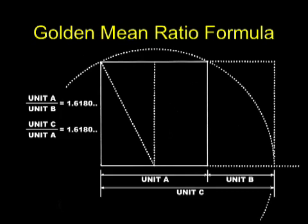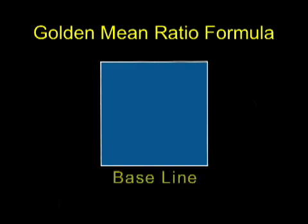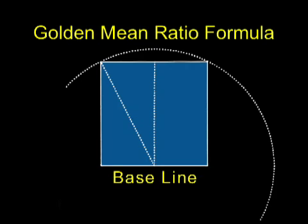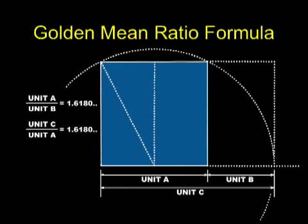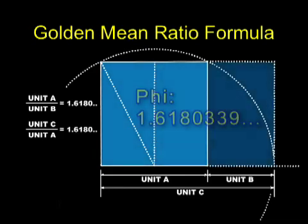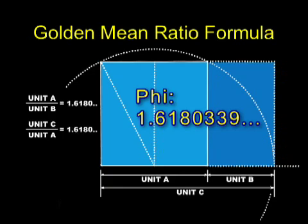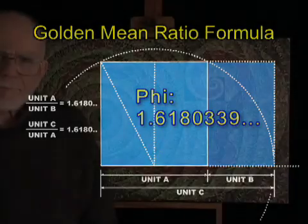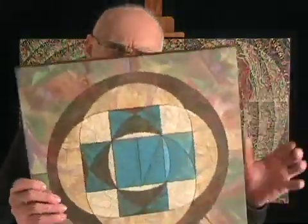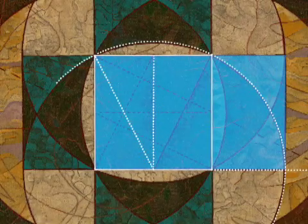The geometric formula for creating the golden mean proportion begins with a square. First, we divide the baseline of our square in half, and that midpoint becomes the center of a circular arc which will bisect the top two corners of our square. Next, we extend the baseline of our square until it bisects the arc of our circle. When we measure the new length of the extended baseline and compare it with the length of our original baseline, we get the number phi, and we have also created the golden mean rectangle and the divine proportion. This geometric formula shows up in my work from time to time — this is actually four of these formulas all ratcheted around one another.